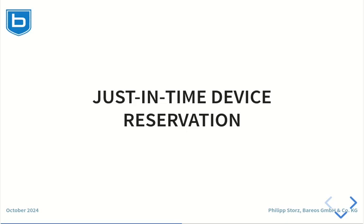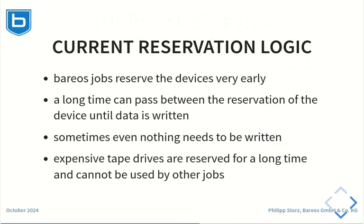Just-in-time reservation was introduced to solve this problem. So how does the Barrios 23 reservation logic work? When a job starts, Barrios runs the prescripts and then reserves a device for the job. Then the actual backup job starts. When doing incremental backups or plugin backups, it can take a long time until the first data is written. It can even happen that no data at all needs to be written — for example when no data was changed since the last backup. This can lead to expensive tape drives being blocked by jobs without data to write, while other jobs that do have data are waiting for the drive.